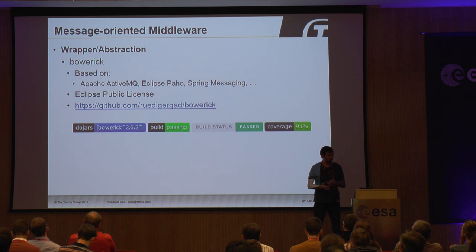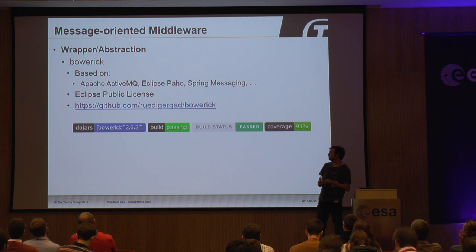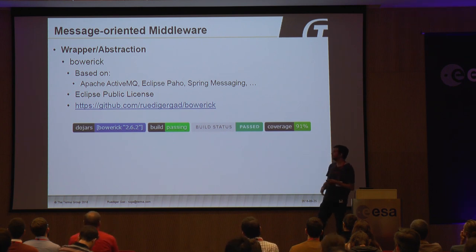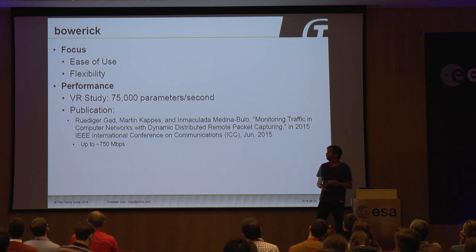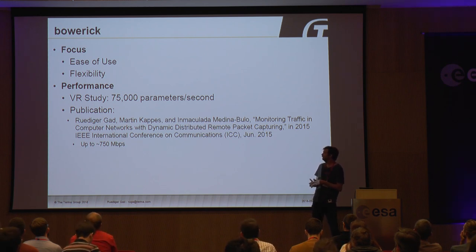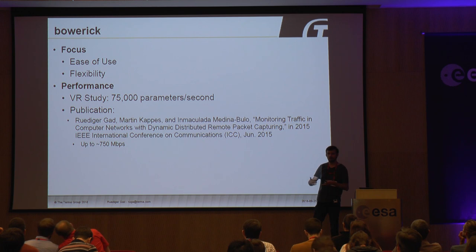Some words about the message-oriented middleware: we used a wrapper abstraction called BORIC, based on Apache ActiveMQ, Eclipse Paho, Spring Messaging, and other libraries, making this multi-protocol middleware easy to use. It's available under the Eclipse public license on GitHub. It passes two different continuous integration systems, and code coverage is about 91%. The focus of BORIC is on ease of use and flexibility. Regarding performance: in the virtual reality study, we transferred 75,000 parameters per second, which was more than enough. There is also a 2015 publication in which we managed to send about 750 million bits per second through a comparable communication infrastructure.